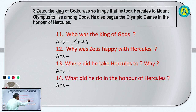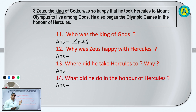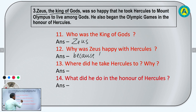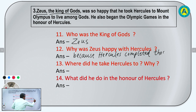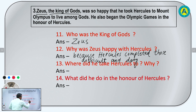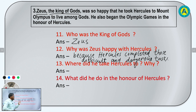Question number 12: Why was Zeus happy with Hercules? Zeus, the king of gods, was so happy that he took Hercules to Mount Olympus to live among gods. Why? Because Hercules completed those difficult and dangerous tasks. That's why Zeus was happy.